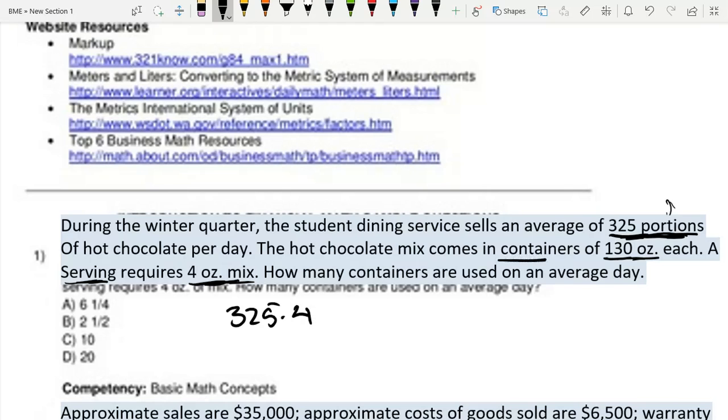Now it comes in containers of 130 ounces each. So I have to divide this by 130 to see how many containers I would have to use. Because I take the total ounces over the container carrying ounces to see how many containers I would need to use.